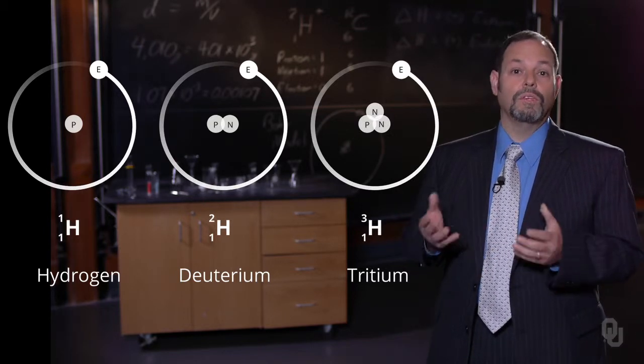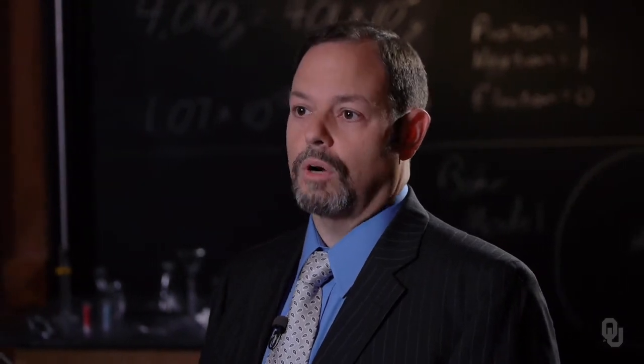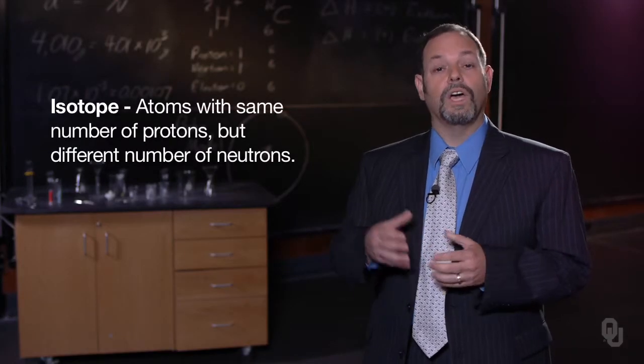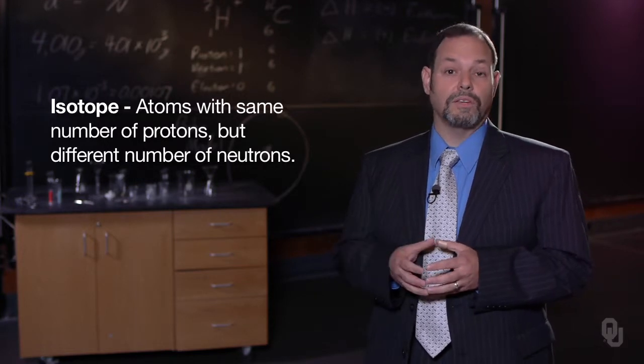If we think about carbon, we have the same thing. Carbon has six protons - if it didn't have six protons, it wouldn't be carbon. We can have six neutrons in carbon, making carbon-12. If we have seven neutrons, carbon-13. These are isotopes, which have different masses.